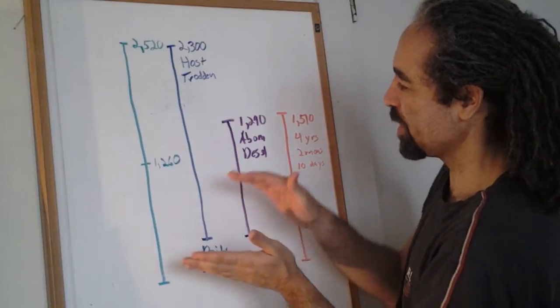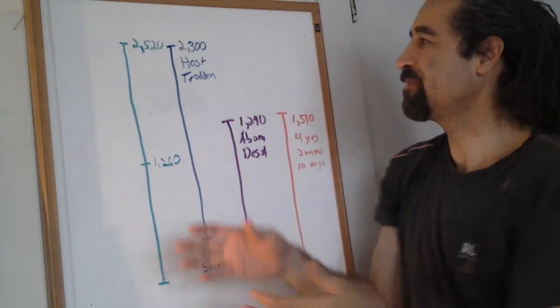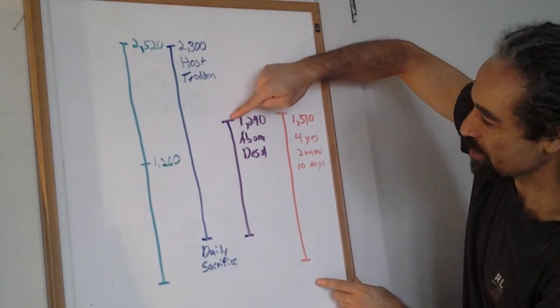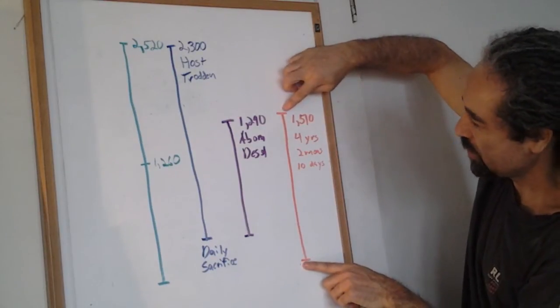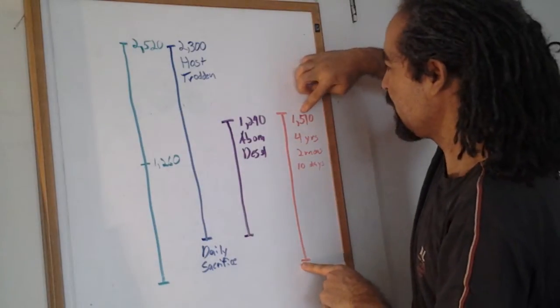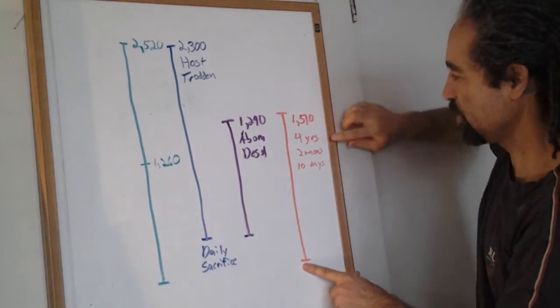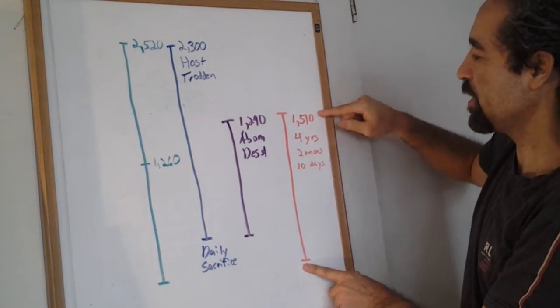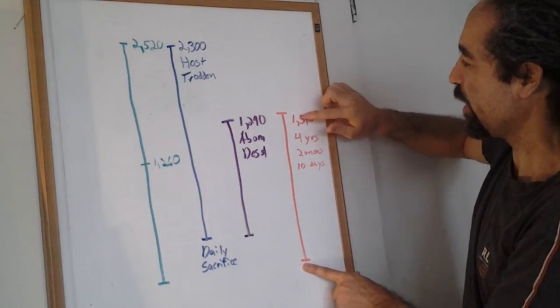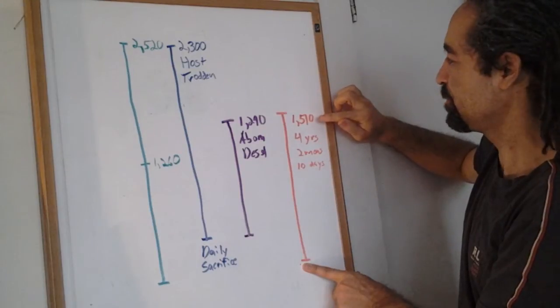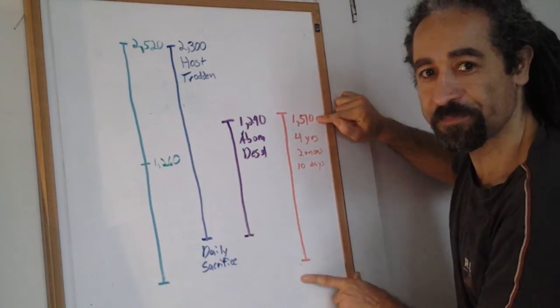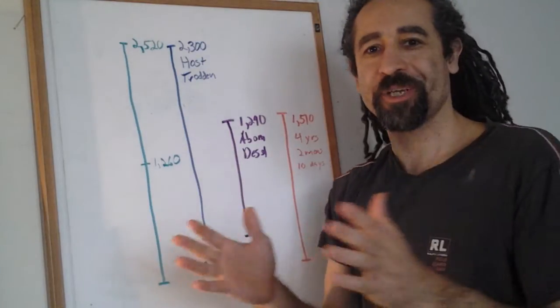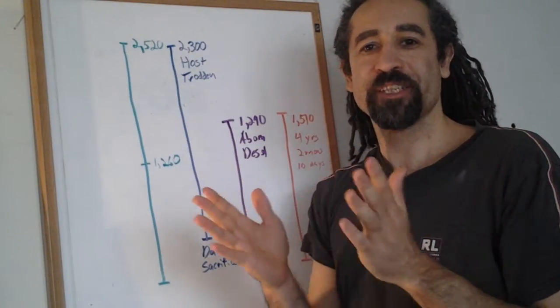So now, if we were to take that, and again we're just saying hypothetically, if the tribulation were to start in 2015, then if we go from this point to the start of the tribulation, that's what we've done here, that's 1,510 days. So this is 4 years, 2 months, and 10 days. That's when the abomination of desolation will take place. So what would happen is the red heifer would have to be offered before this.